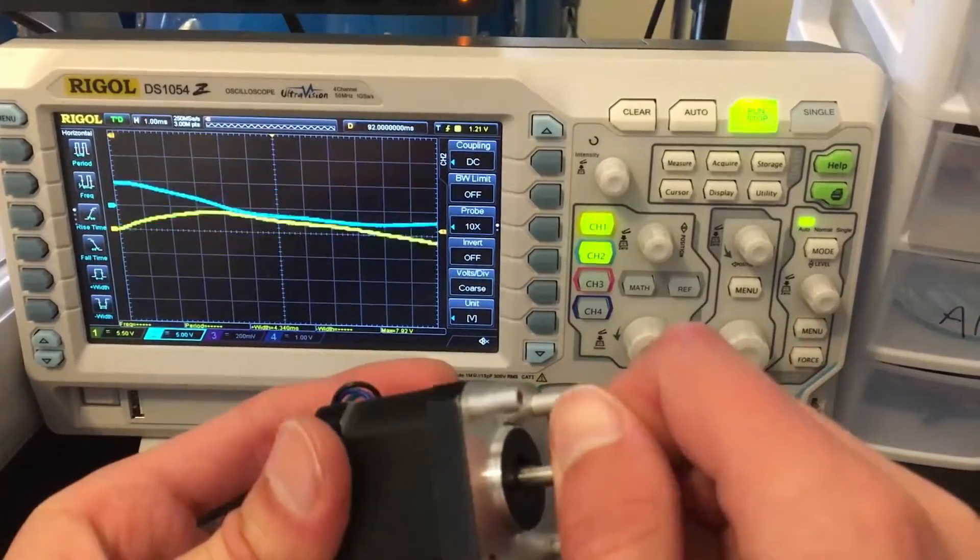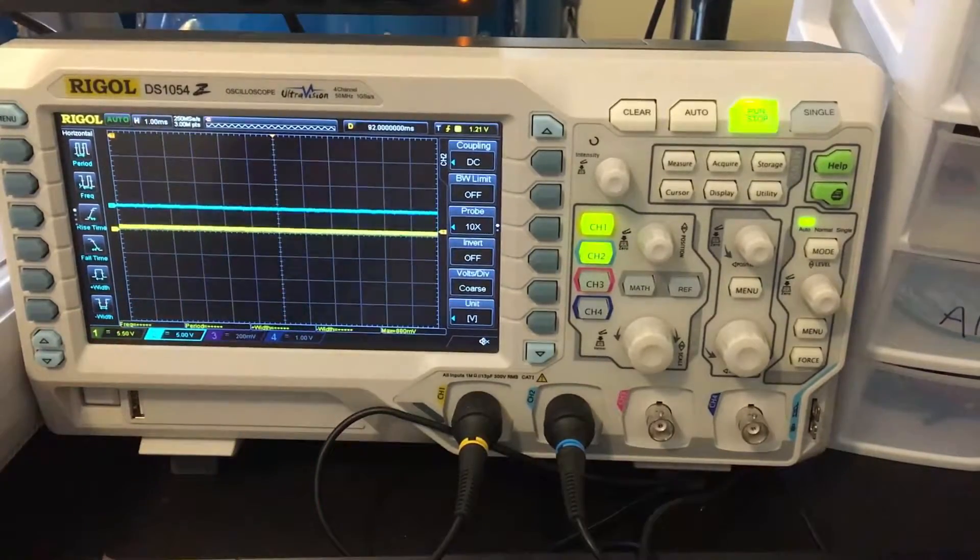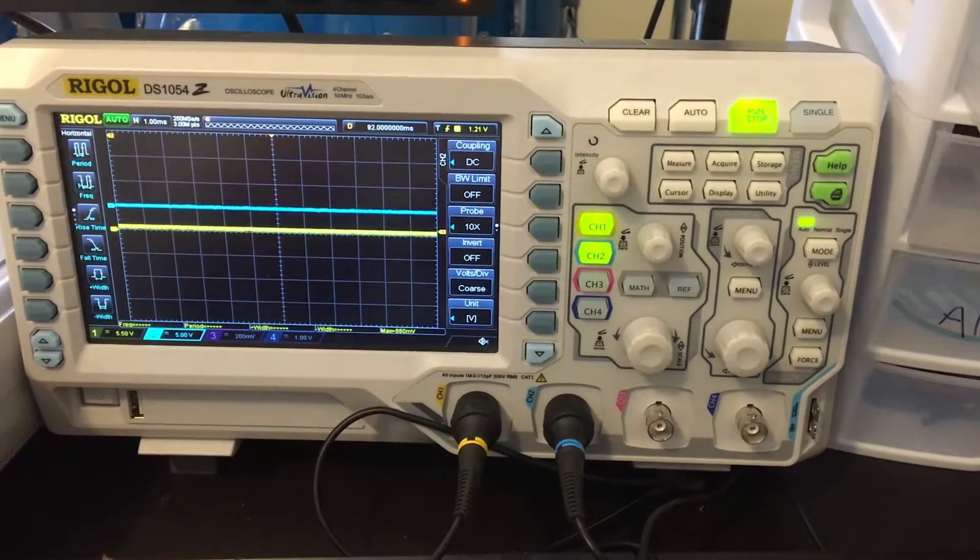Because the stepper motor outputs two phases, one phase on each coil, we're going to build two full bridge rectifiers, one to rectify each one of these sine waves into DC.